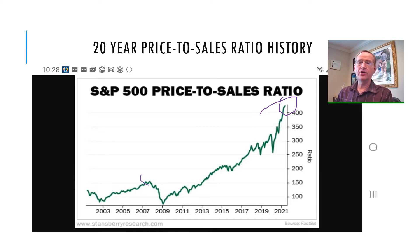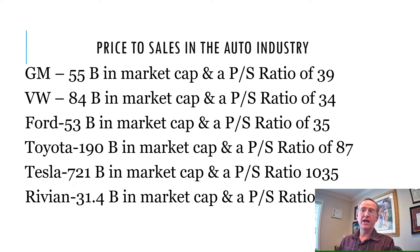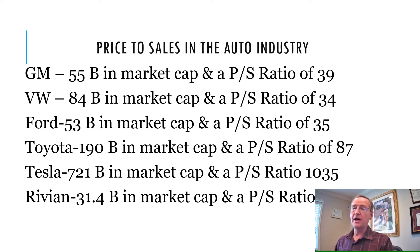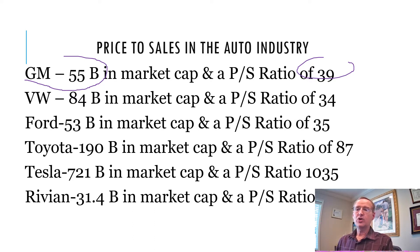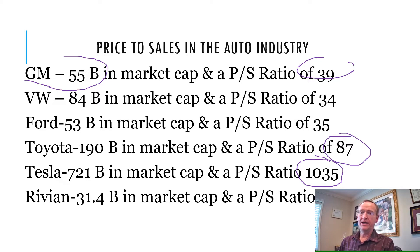Back in 2007 before the market dropped 50%, we were sitting in the range of like 150 to 170, where normal is around 100 — so it was high, but nothing like today. Looking at the auto industry: GM has a $55 billion market cap with a ratio of 39; VW, $89 billion, ratio of 34; Ford, $53 billion market cap, ratio of 35; Toyota, 87. And then you have Tesla at 1,035 — that's more than 10 times Toyota, and about 30 times higher than Ford, VW, and GM.